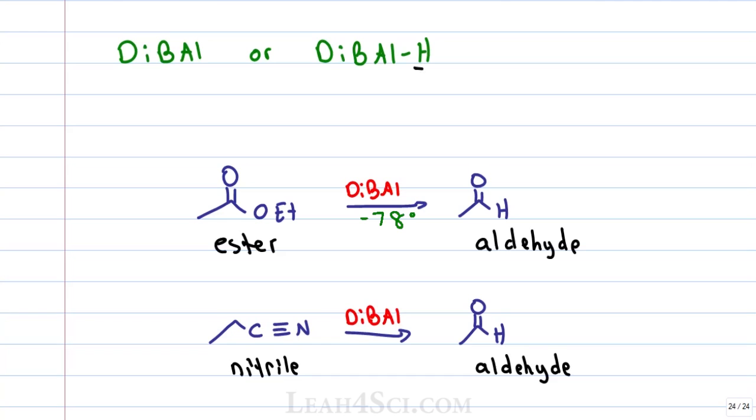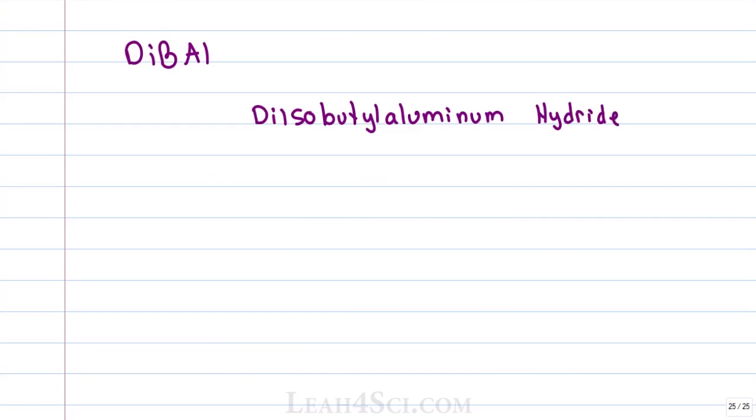So what is DIBAL and why do we have two different ways of spelling it? DIBAL stands for diisobutyl aluminum hydride, where the H can be added to show that the aluminum has one hydrogen attached.